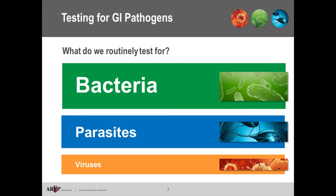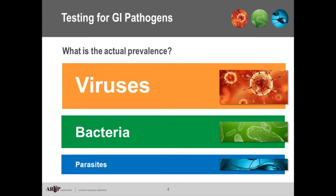When we think about GI pathogens, what are we routinely testing for? If we look at physician ordering practices, bacteria are by and large the number one assayed group, followed by parasites, and a distant third, viruses. But in reality, the prevalence of what's actually causing these GI illnesses is at least 60% viruses, perhaps 20% bacteria, and 15% to 20% parasites.